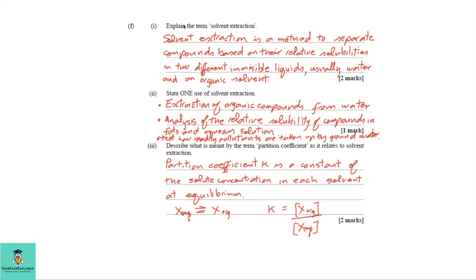F part 1: solvent extraction is a method to separate components based on their relative solubilities in two different immiscible liquids, usually water and an organic solvent. F part 2: uses of solvent extraction include extraction of organic compounds from water, analysis of the relative solubility of compounds in fats and aqueous solutions, and testing how readily pollutants are taken up by groundwater — choose any one.